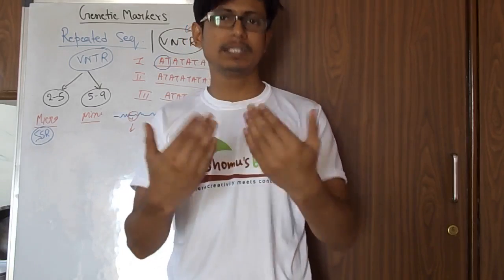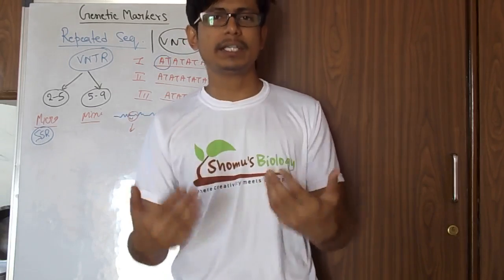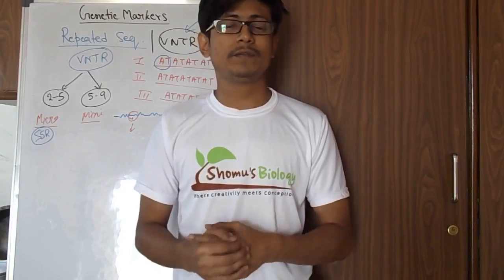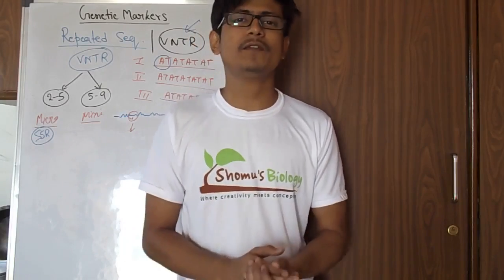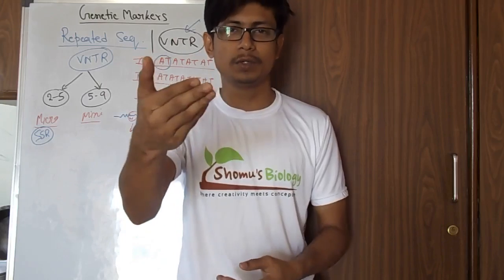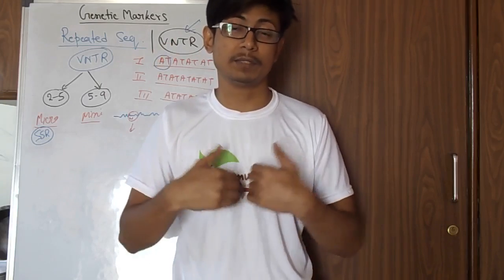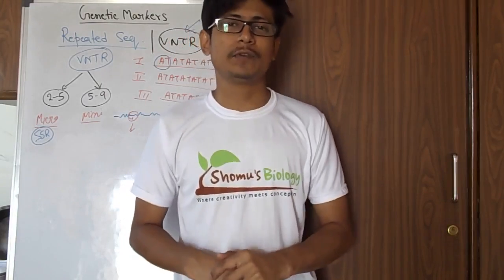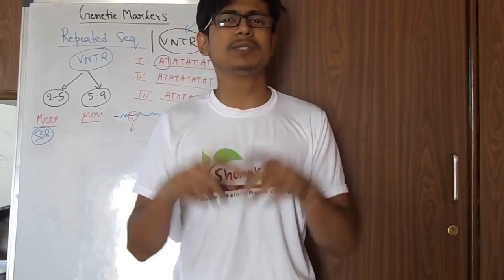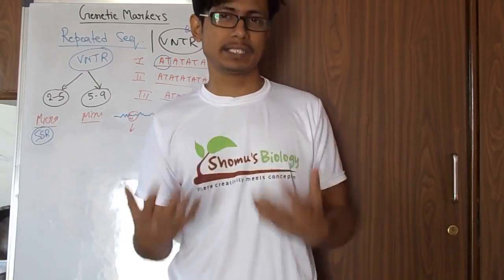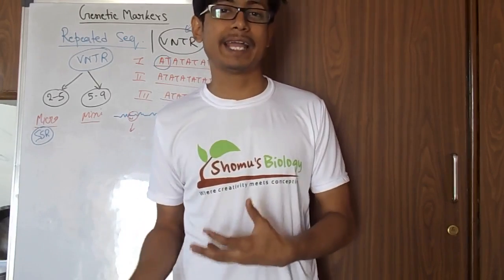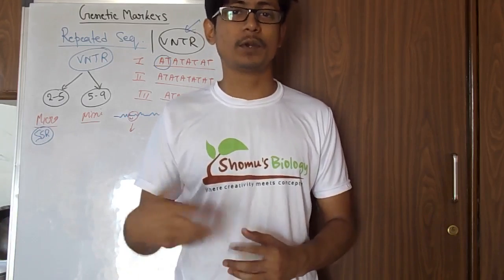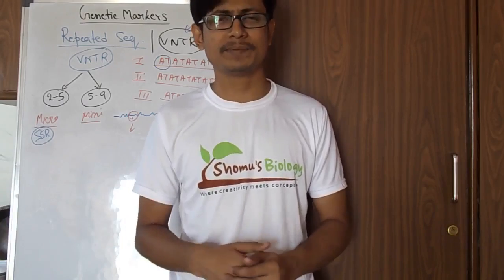In you and me, our genetic material will be very similar because we are both human beings. But if you take our DNA and check it, you'll find the repeated units in your genome vary from the repeated units in my genome. These variable repeated units of nucleotide sequences are important to figure out genetic makeup, and we can use them as a genetic bar coding system or for a DNA fingerprinting assay — useful for disease detection and forensic science.